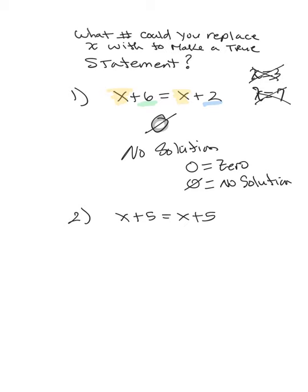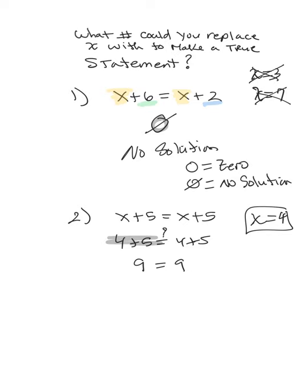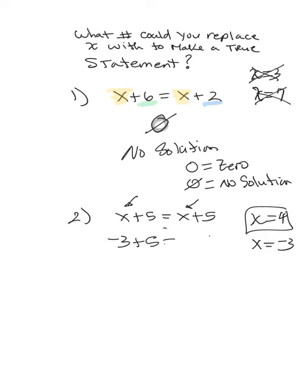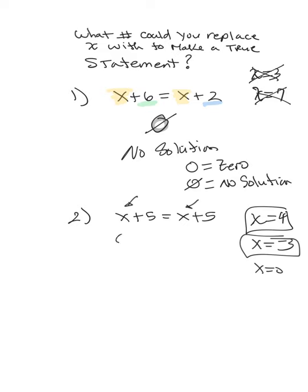What about number 2? What could you replace X with to make a true statement? Let's try 4: 4 plus 5 equals 4 plus 5 — yes, you get 9 on both sides, so 4 is a solution. But is that the only solution? What about X equals negative 3? That gives 2 on both sides — true, so that's a solution too. What about X equals 0? 0 plus 5 equals 0 plus 5 — yes, 5 equals 5, so that's a solution.